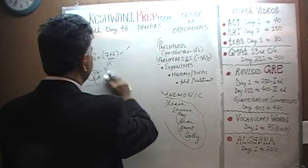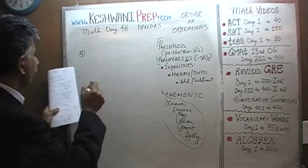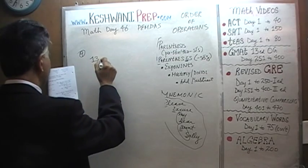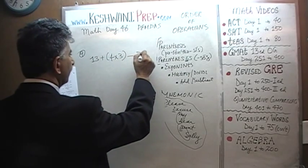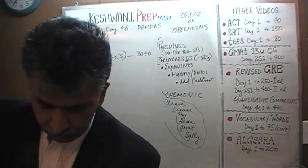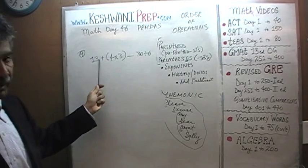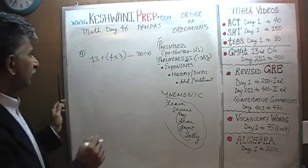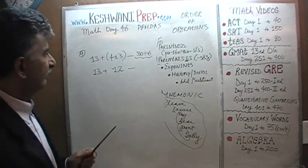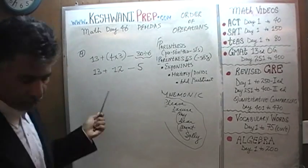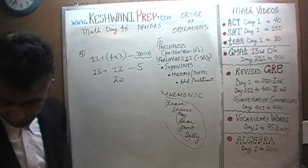Number 9: 13 + (4 × 3) - 30 ÷ 6. Even though 30 ÷ 6 does not have parentheses around it, we have to take care of multiplication and division before we worry about addition. First the parenthesis: 4 × 3 = 12. Then 30 ÷ 6 = 5. So we get 13 + 12 - 5. 13 plus 12 is 25, minus 5 is 20.